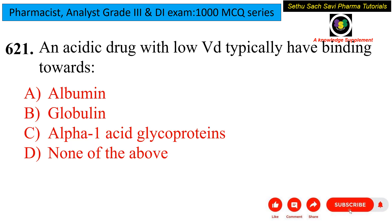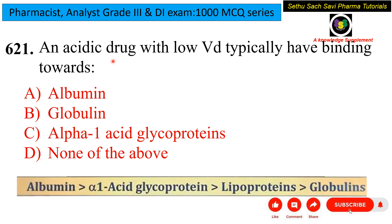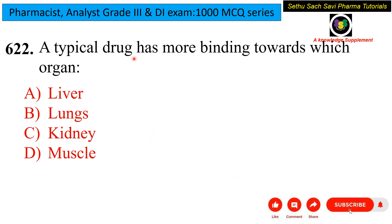In this question, the drug has low volume of distribution, meaning higher plasma protein binding. Since it is an acidic drug, it will bind to a basic plasma protein. Albumin is the most abundant basic plasma protein, so the most probable answer is albumin.